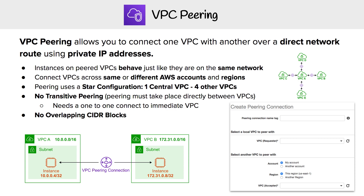We're looking at VPC peering, which allows you to connect one VPC to another over a direct network route using private IP addresses. The idea is we have VPC A and VPC B, and we want them to behave like they're on the same network — that's what a VPC peering connection allows us to do.